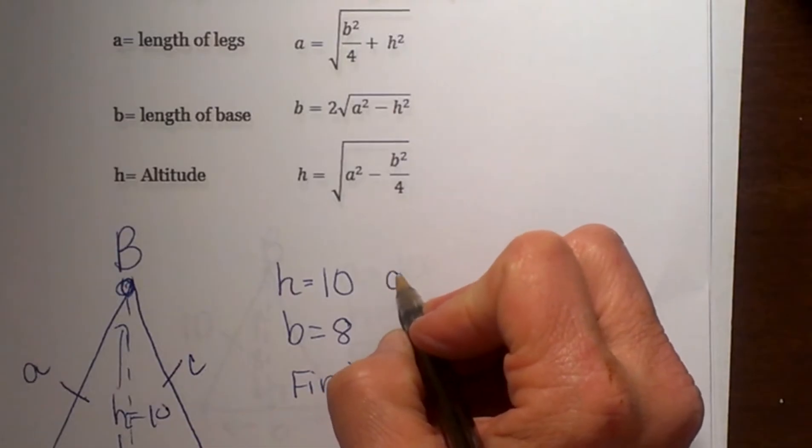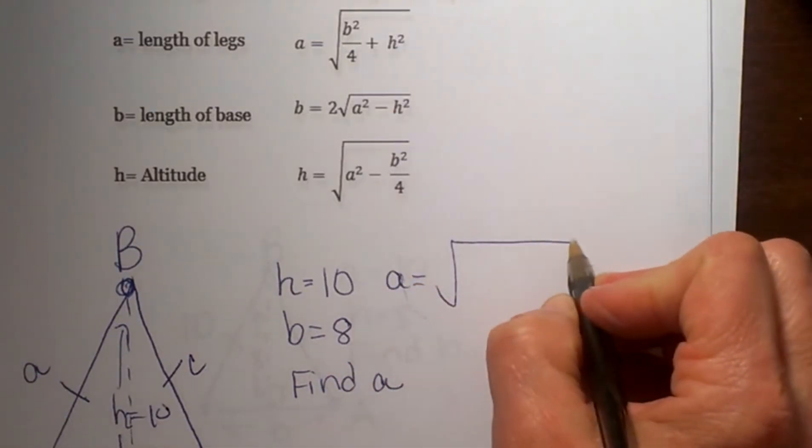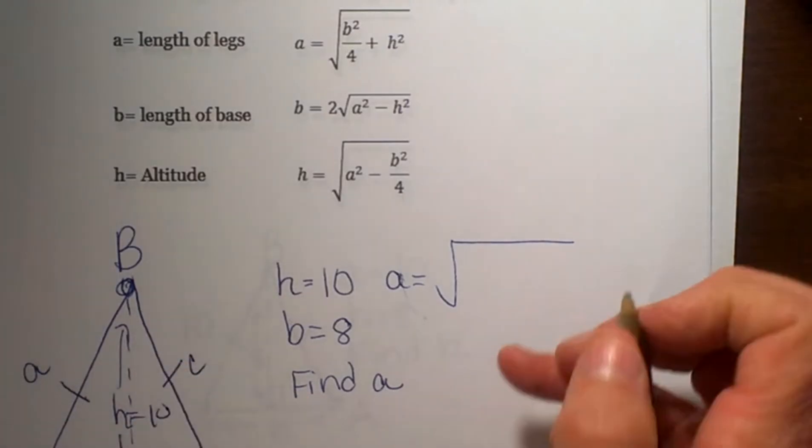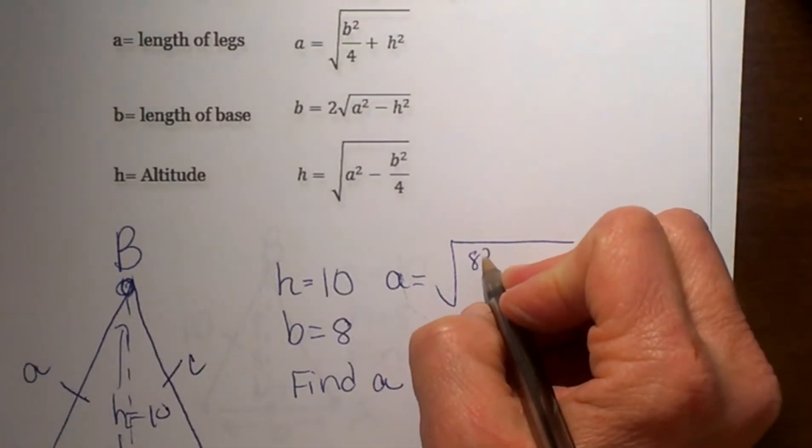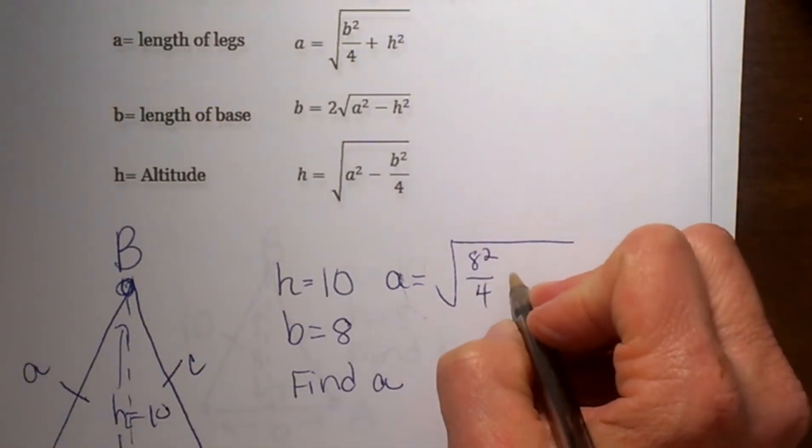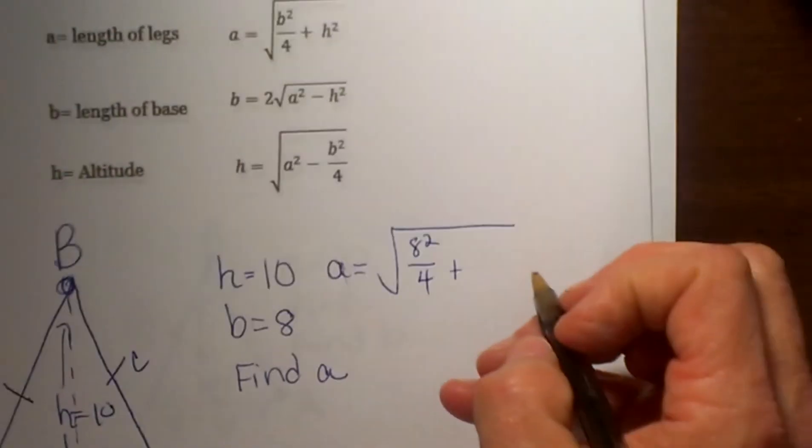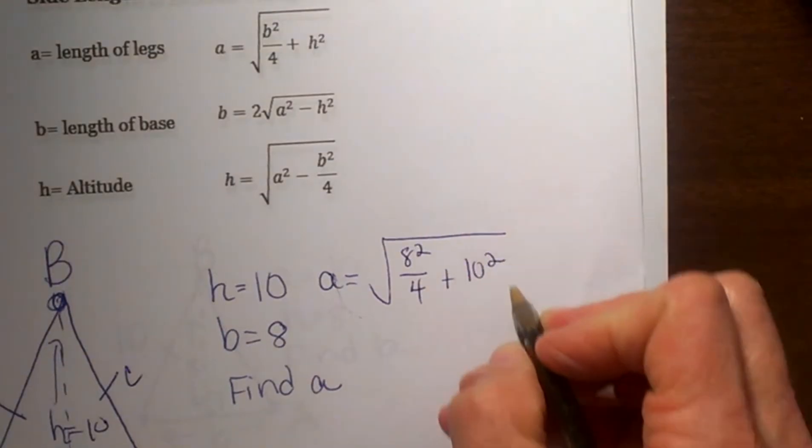So a equals the square root of b squared over 4 plus h squared. My base b is 8, so that's 8 squared over 4. The height of the triangle is 10, so I'm going to plug in 10 and square that.